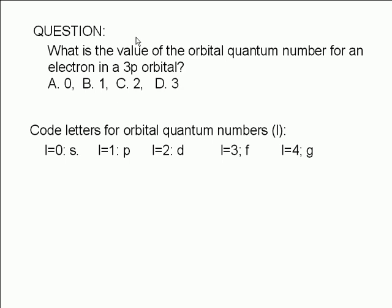Therefore, for an electron in a 3p orbital, the orbital quantum number L is equal to 1.